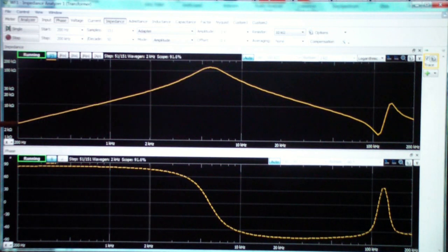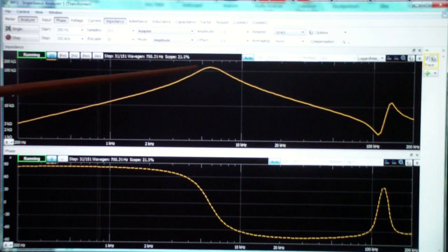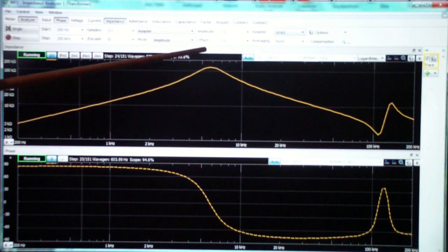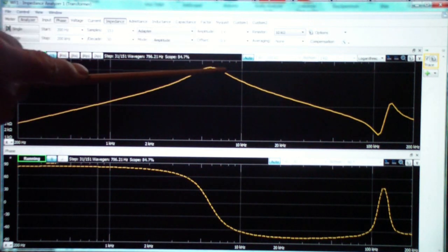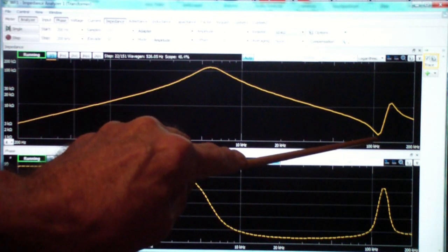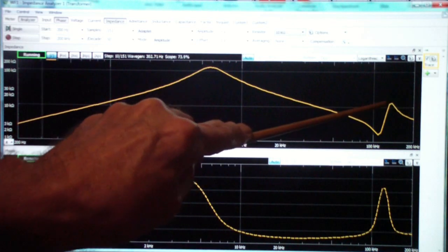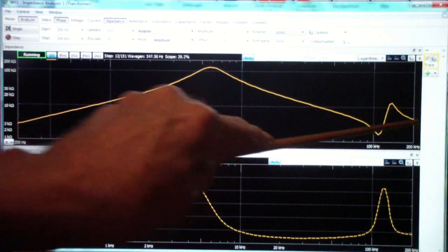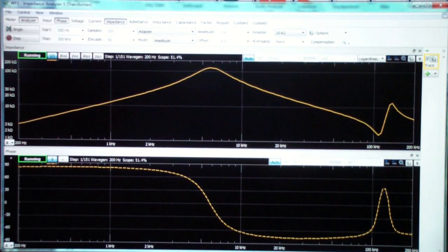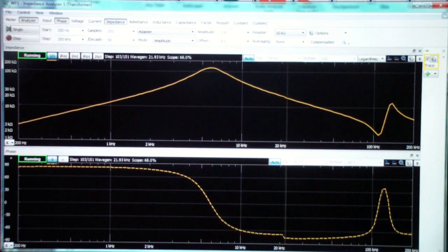So what do you see? Well the impedance rises pretty much on a straight line with a little bit of a curve here to a peak at about 5 kilohertz. Then the impedance begins to go down. It reaches a minimum of less than 2,000 ohms out here a little beyond 100 kilohertz. This is a push-pull transformer with two windings for a primary. I'm now going to switch over to the other side.